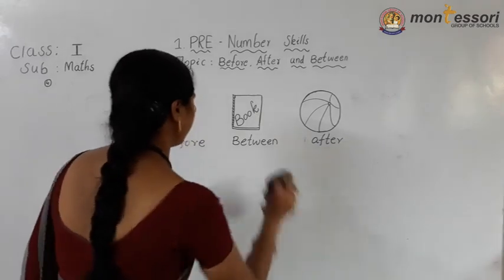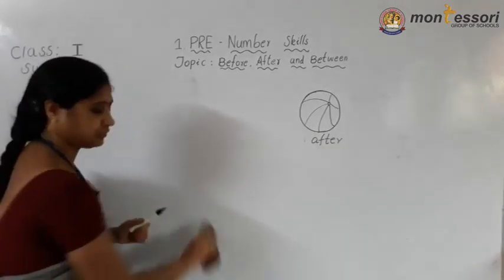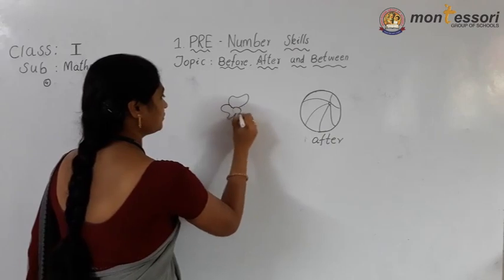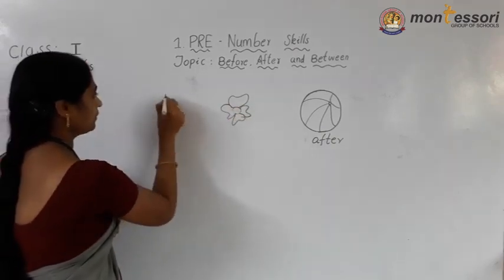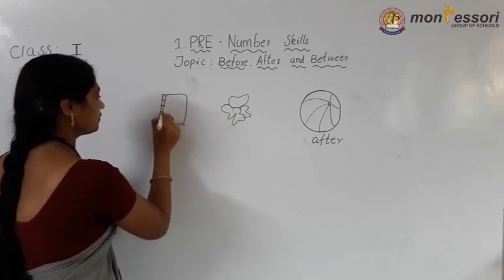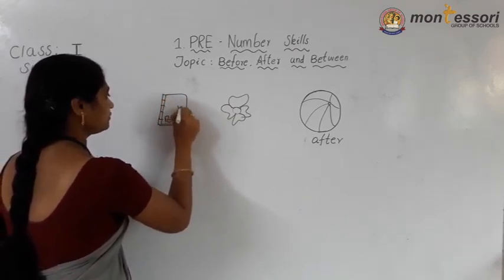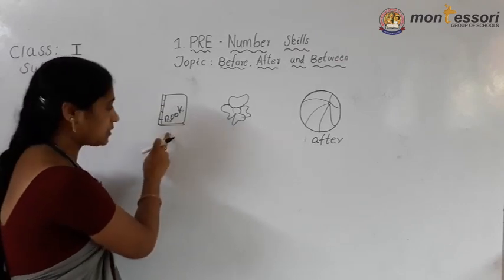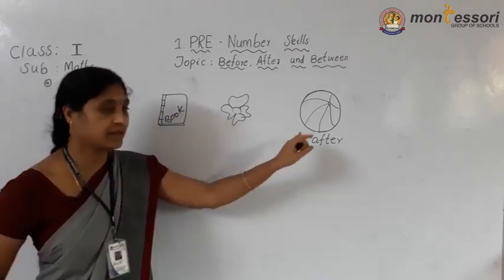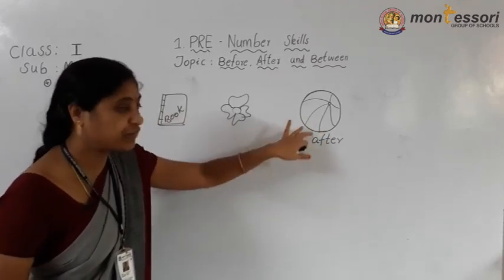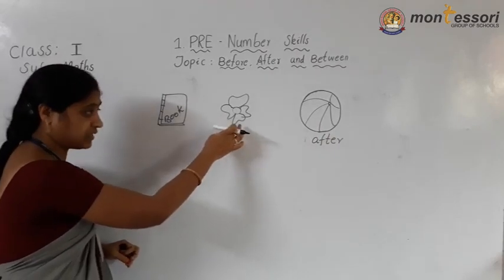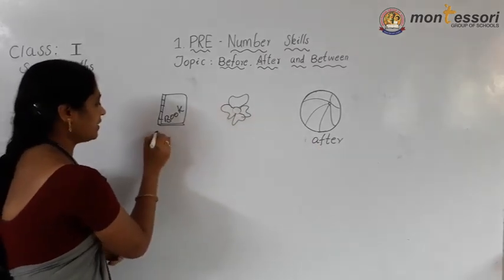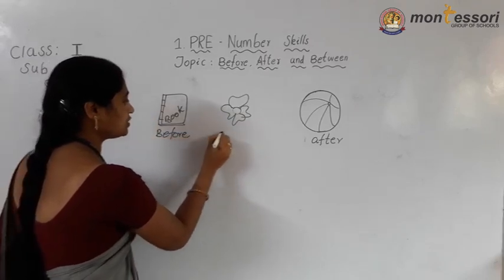Now I will change the places. Here flower and here book. The book's place is before the flower. The ball's place is after the flower. Now the flower's place is between book and ball. This one before, and here this one between.